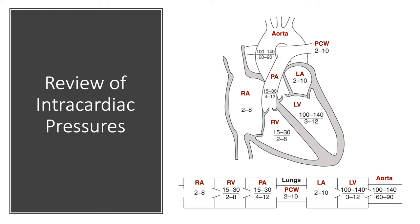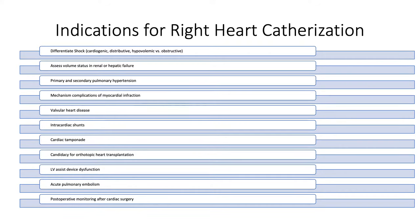There are all sorts of indications for right heart catheterization. A key one is to determine the cause of shock. It can also be used to evaluate hemodynamics in valvular heart disease, extent of shunting, pre-heart transplant evaluation, and evaluation of pulmonary hypertension.